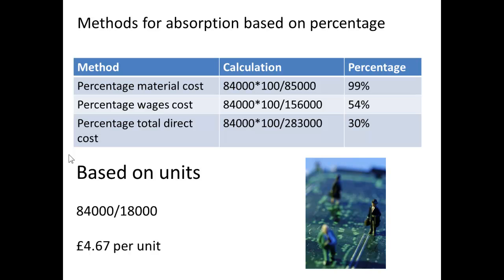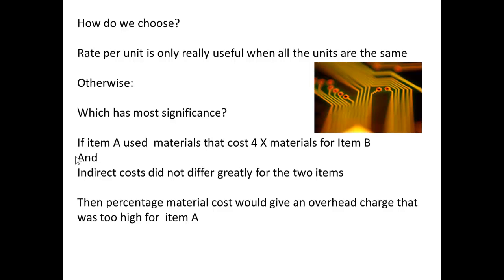If I want to absorb based on a percentage, I could absorb based on a percentage of materials, which would come to 99%; or for wages, which would come to 54%; or for total direct costs, which would come to 30%. If I based it on units, I'd simply divide the $84,000 overhead costs by 18,000 units, and I'd get a figure of £4.67 per unit for absorption.